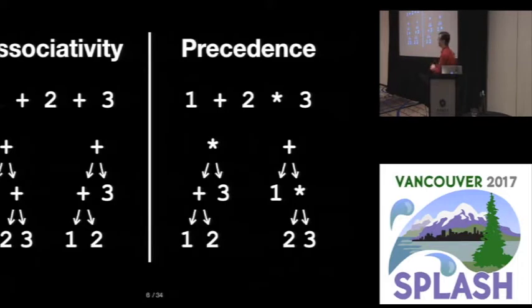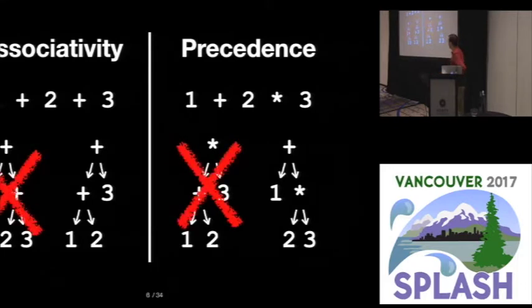So for plus, we have to decide which of the pluses gets the root, or in precedence, whether plus or times gets them. And by adding associativity or precedence declarations, we can tell the parser that one of these two trees is not what we want. We want to reject that.